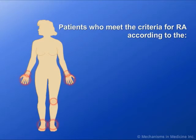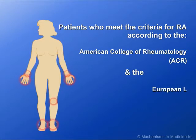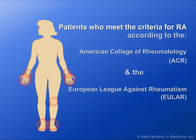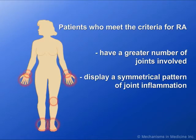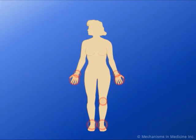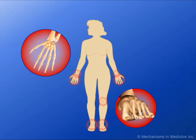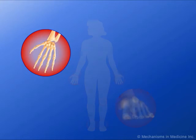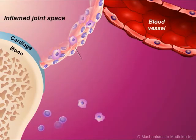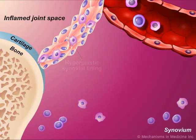In comparison to UA, patients who meet the American College of Rheumatology, or ACR, criteria and the European League Against Rheumatism, or EULAR, criteria for RA have a greater number of joints involved and often display a symmetrical pattern of joint inflammation. This symmetrical pattern is commonly found in the joints of the hands and feet. RA patients also have a higher prevalence of radiographic erosions at the time of diagnosis and decreased functional ability as compared to UA patients.